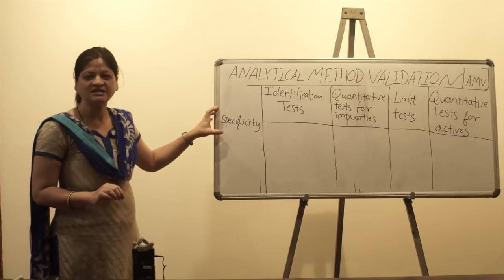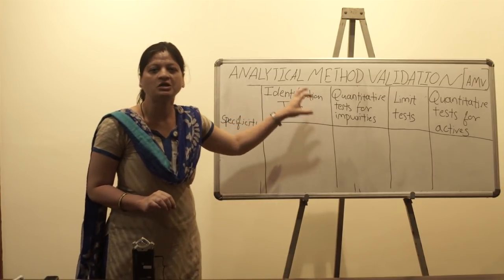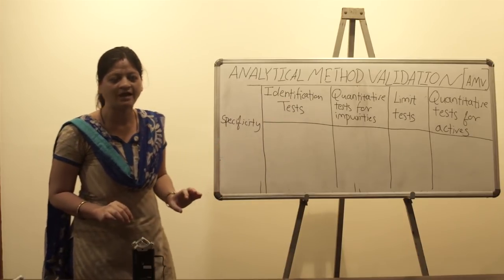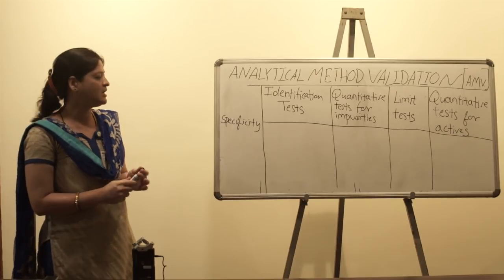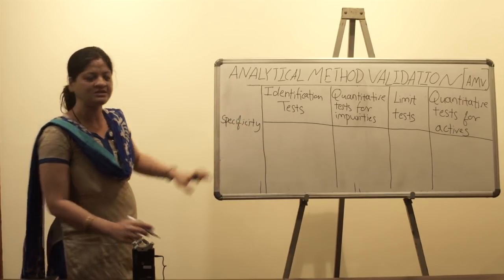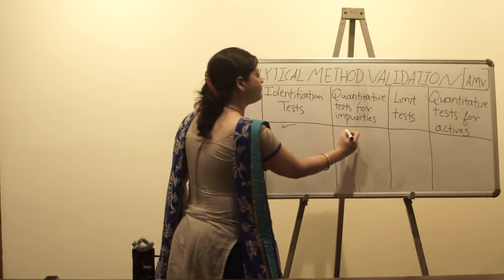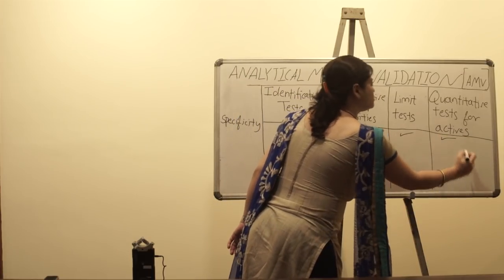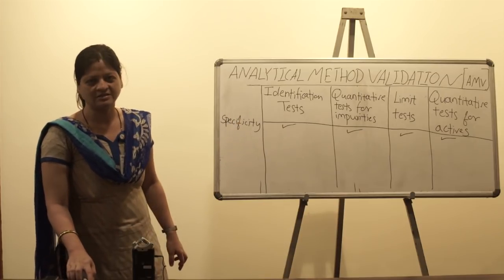As per ICH recommendations, specificity has to be demonstrated whenever you are performing analytical method validation. It is applicable for identification tests, impurity tests, limit tests, and quantitative tests for active substances.